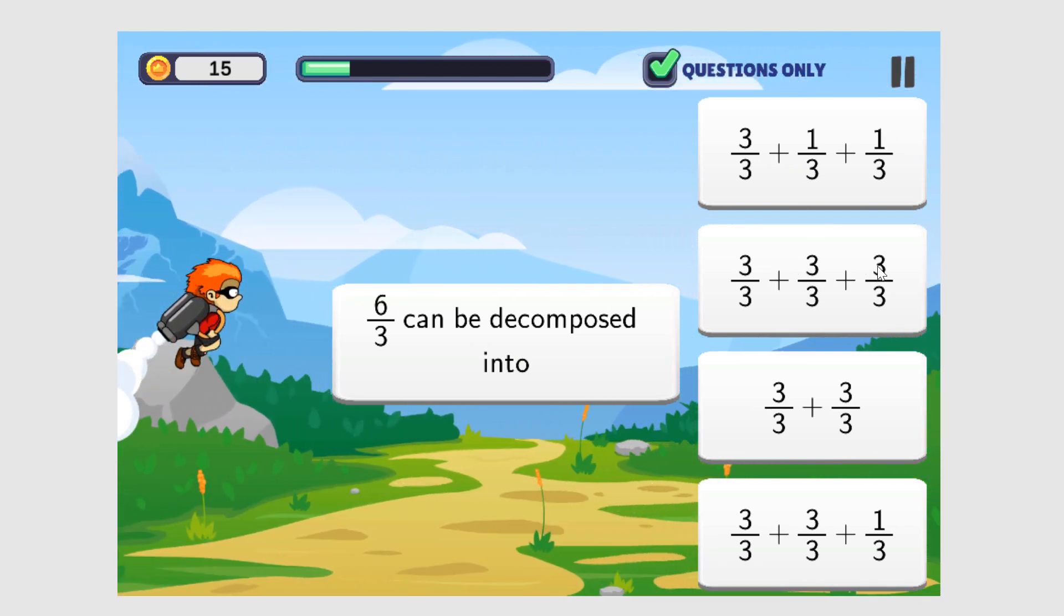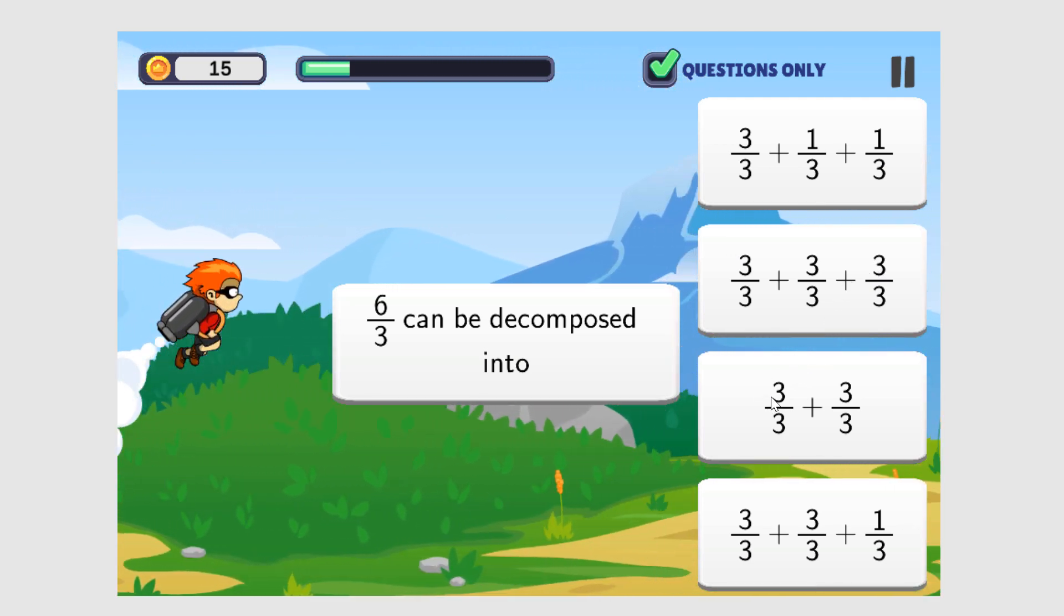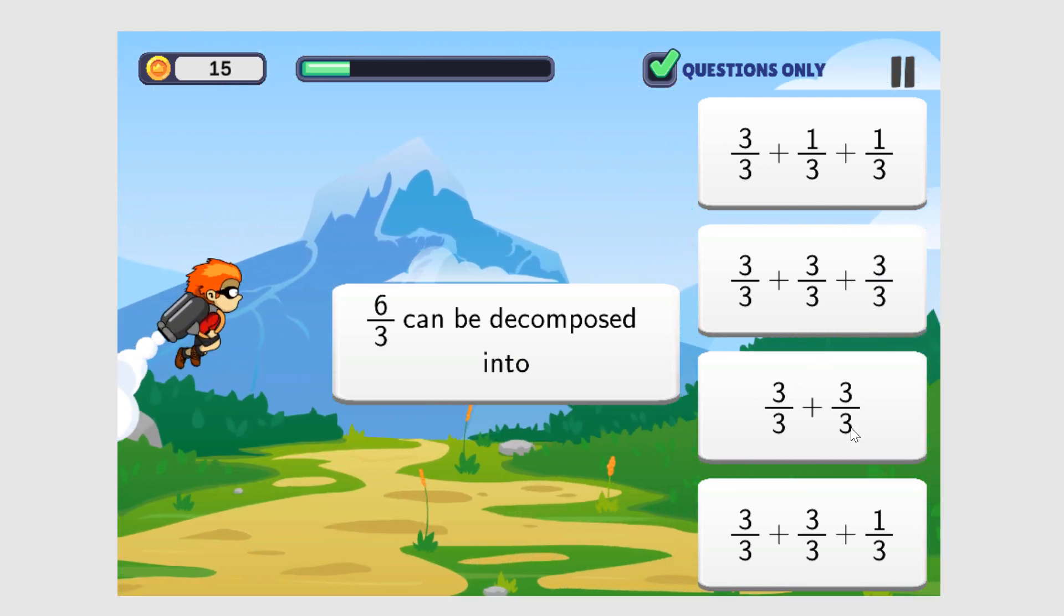Three plus three plus three is nine, nine-thirds. That's incorrect. Three plus three is six, six-thirds. That is correct.